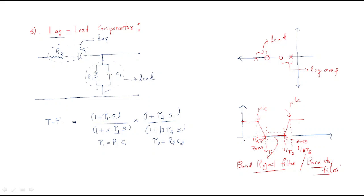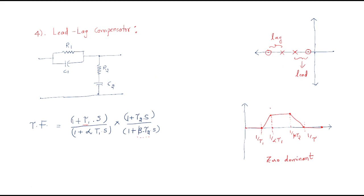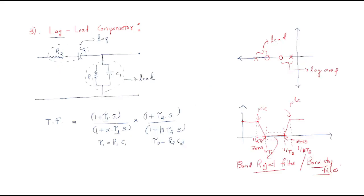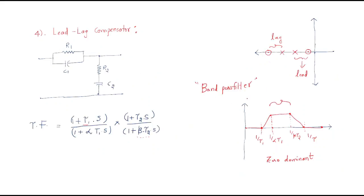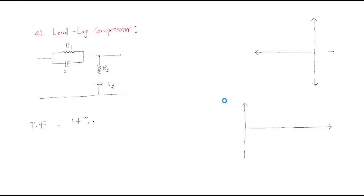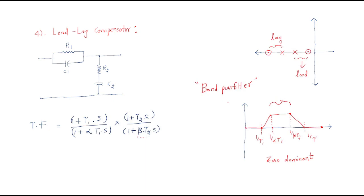If you observe the lead-lag compensator magnitude plot, for a particular band of frequencies the signal is allowed through while other frequencies have magnitude approaching zero — that is why it is called a band pass filter. Comparing: the lag-lead compensator acts as a band reject (band stop) filter, while the lead-lag compensator acts as a band pass filter. This concludes the session on lag-lead and lead-lag compensators.